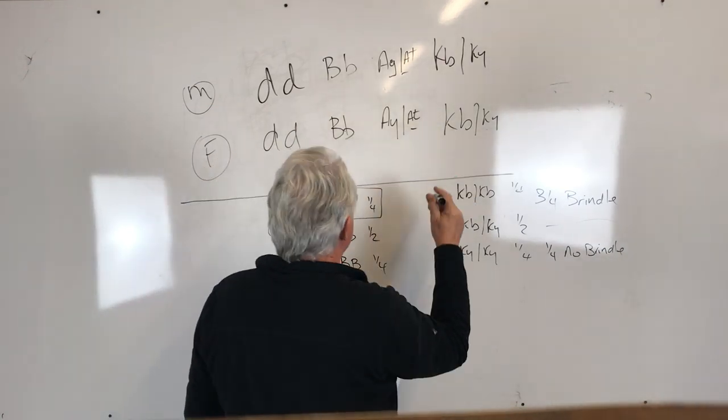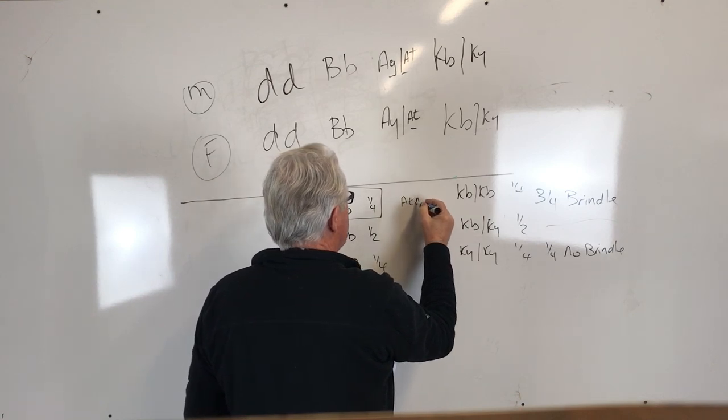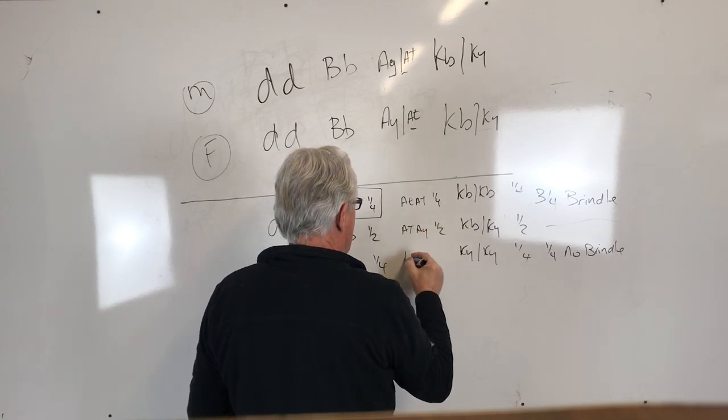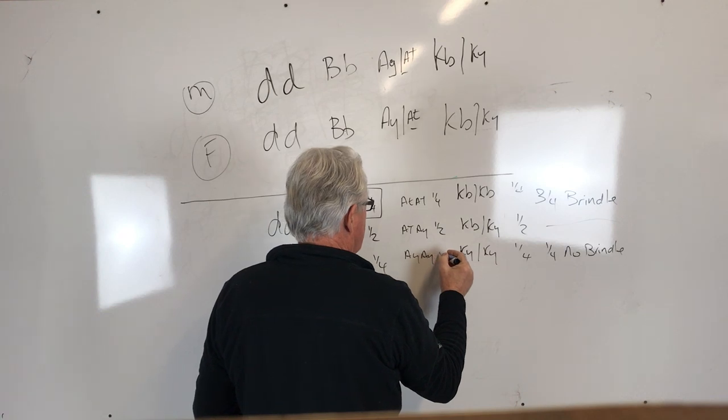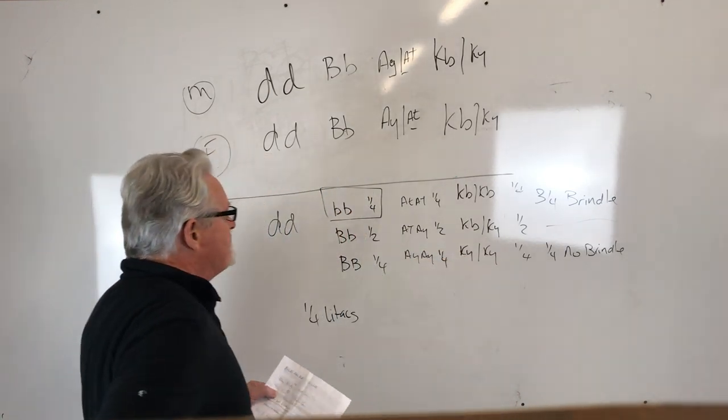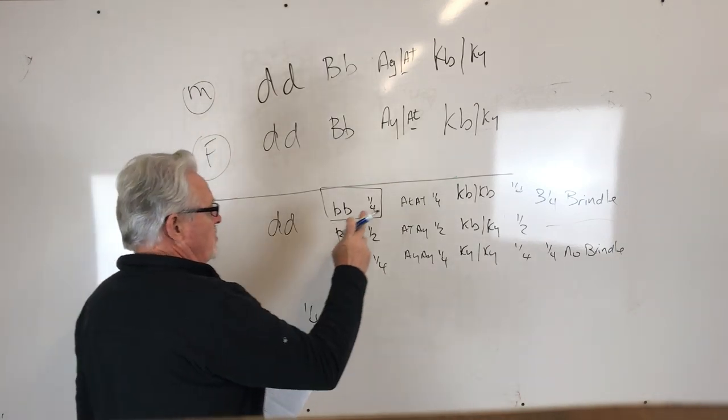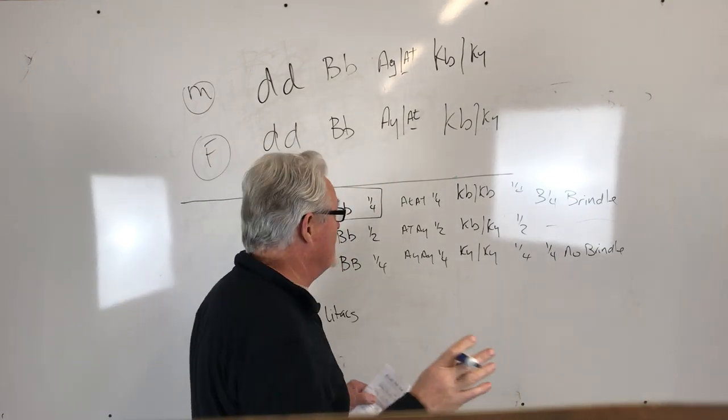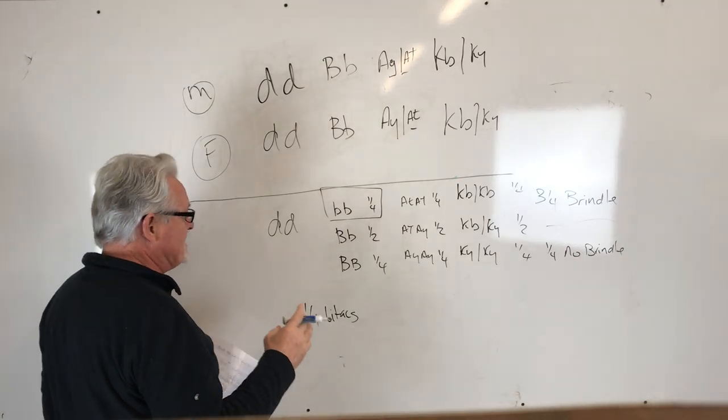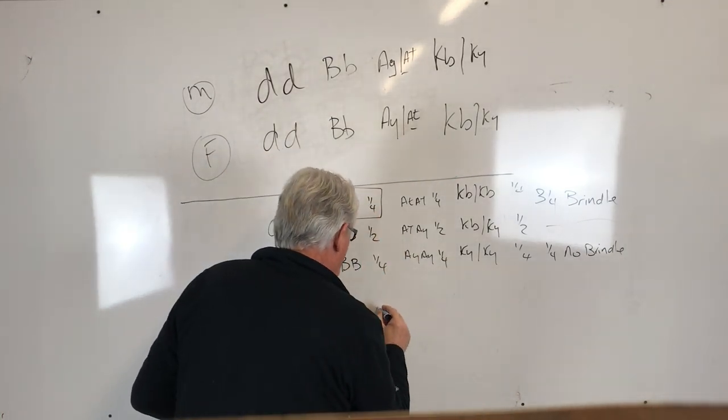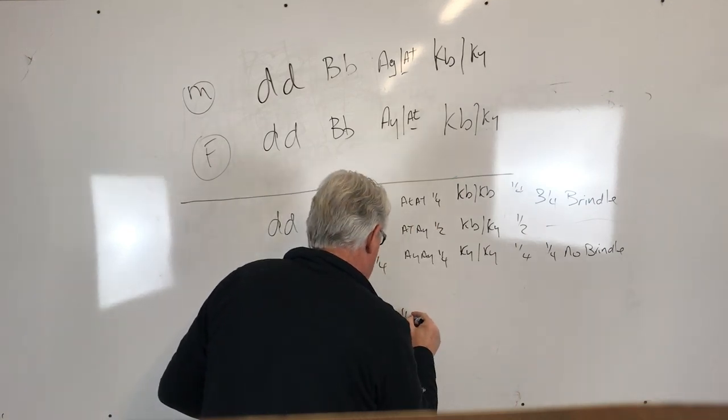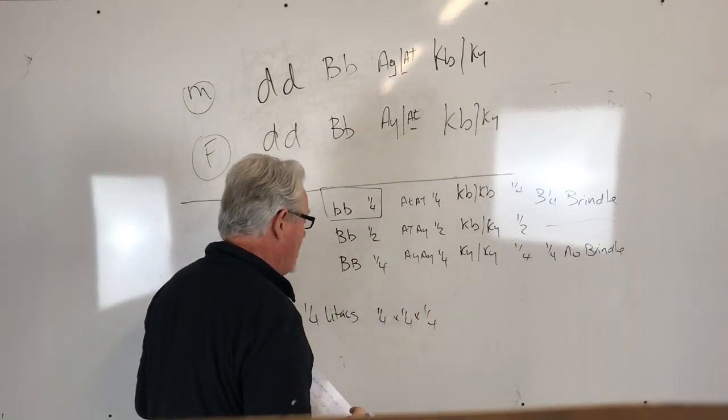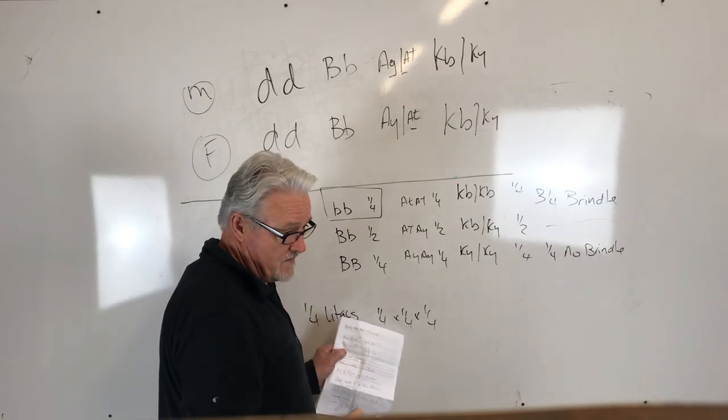And then on the AYT gene, same thing's going to happen again. Your possibilities are AT AT, get that one quarter of the time. AT AY, get that half the time. And AY AY, get that quarter of the time. So you could absolutely get here some lilac dogs that are full tan points that don't carry brindle. But the chances are pretty darn slim for all of that to line up. In fact, for that to happen would only happen one quarter of the time, and one quarter of the time with full tan points, and one quarter of the time with no brindle.